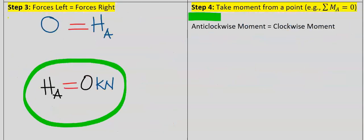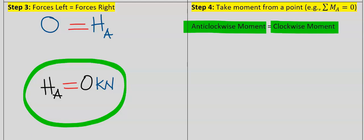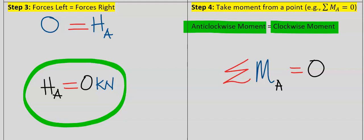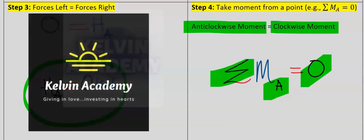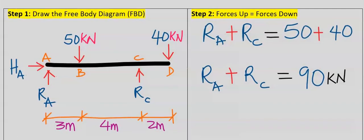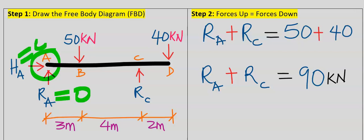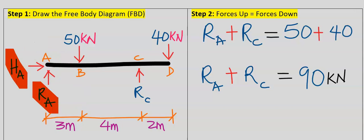In step number four, the anticlockwise moment is equal to the clockwise moment. Mathematically, the sum of all moments at point A is equal to zero. When you take moment about any point, all forces acting at that point — the horizontal force and the vertical force — are assumed to be zero.